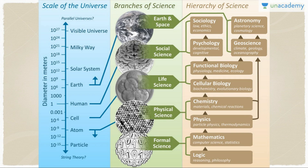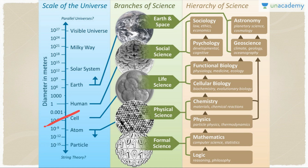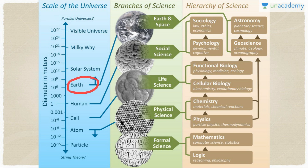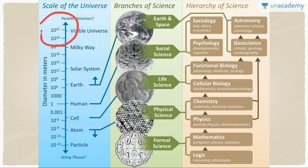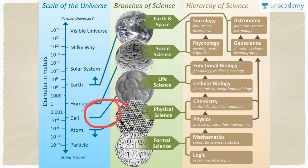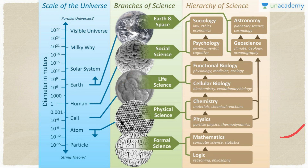To give an example — formal sciences include mathematics and logic. There is a scale from femtometer and nanometer at the smallest end, up to the visible universe at 10 to the power 27 meters. Physics deals with atoms; life sciences deal with human beings; social sciences deal with human beings and Earth; space deals with everything. These are the basic classifications of sciences — sometimes questions are asked about this scale.